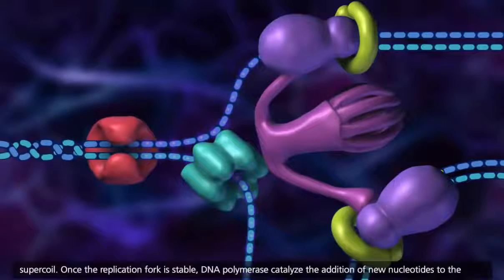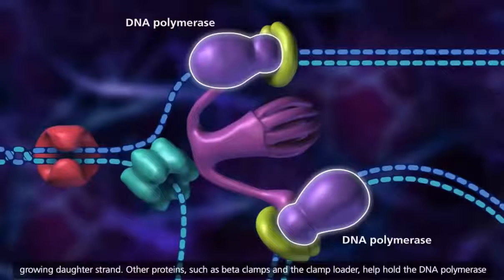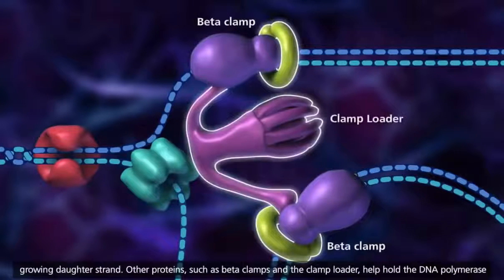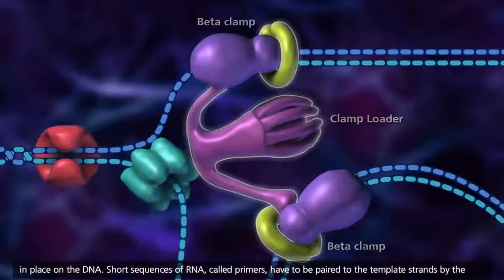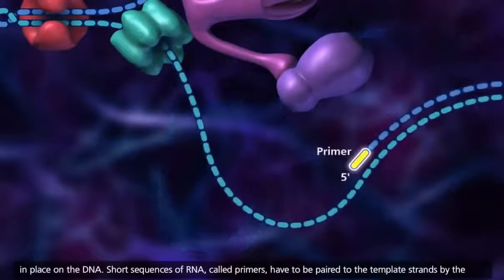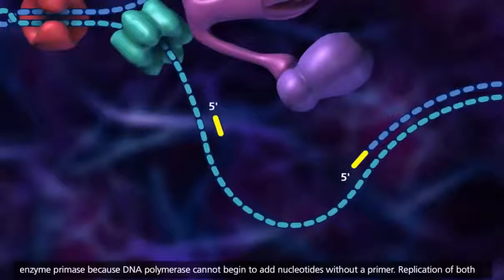Once the replication fork is stable, DNA polymerase catalyzes the addition of new nucleotides to the growing daughter strand. Other proteins, such as beta-clamps and the clamp loader, help hold the DNA polymerase in place on the DNA. Short sequences of RNA, called primers, have to be paired to the template strands by the enzyme primase, because DNA polymerase cannot begin to add nucleotides without a primer.